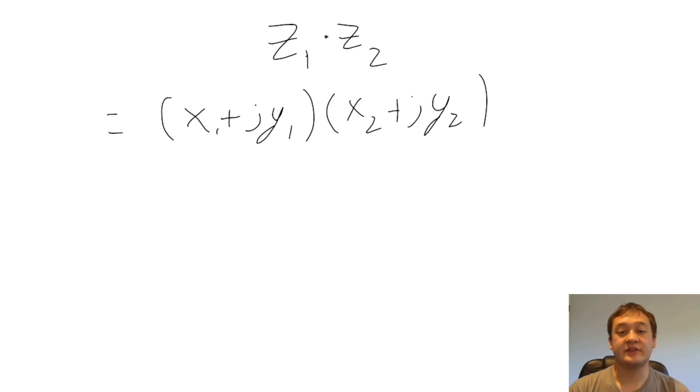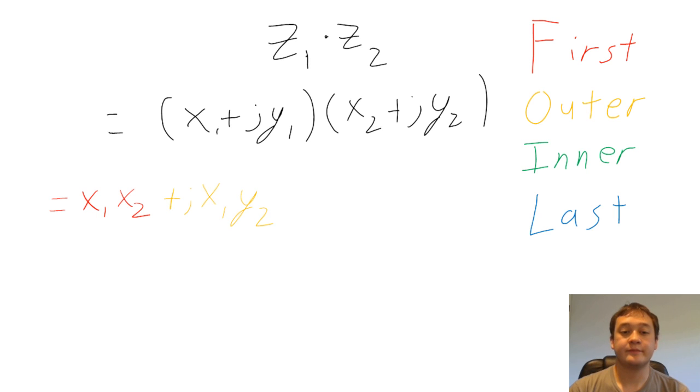Multiplication of two complex numbers in Cartesian coordinates can be completed by using the FOIL method. We multiply the first terms together, then add that to the outer terms, then add those to the inner terms, and add those to the last terms.